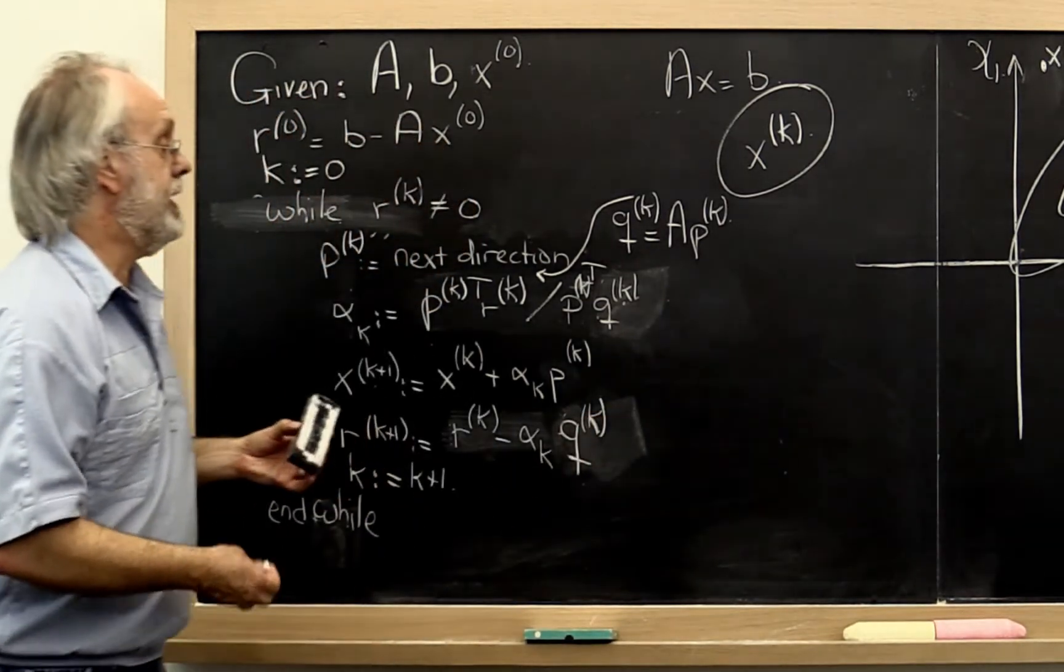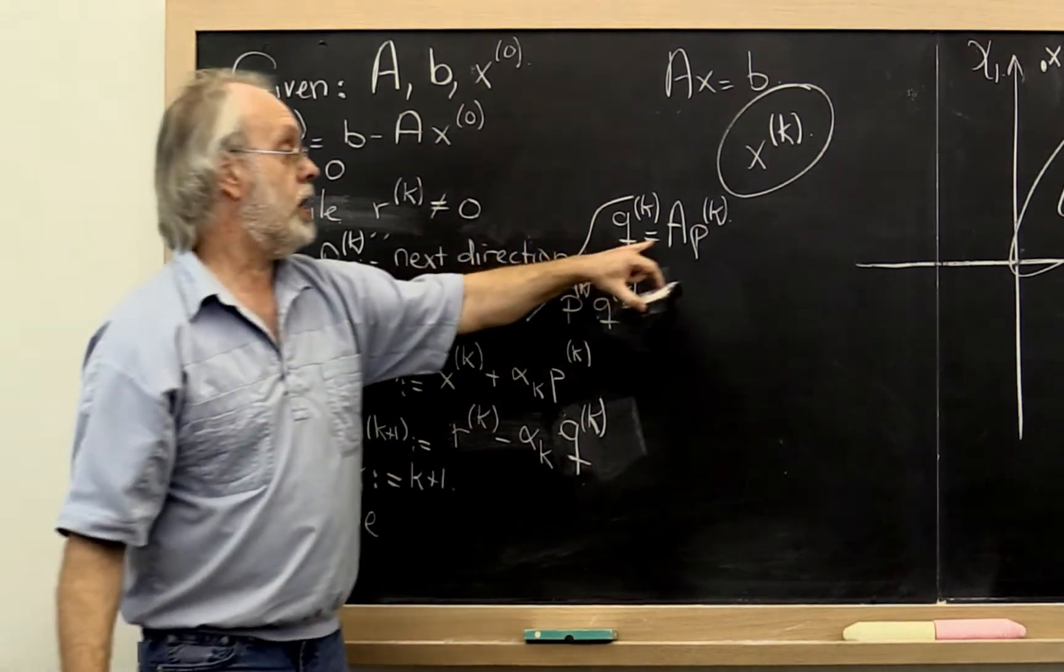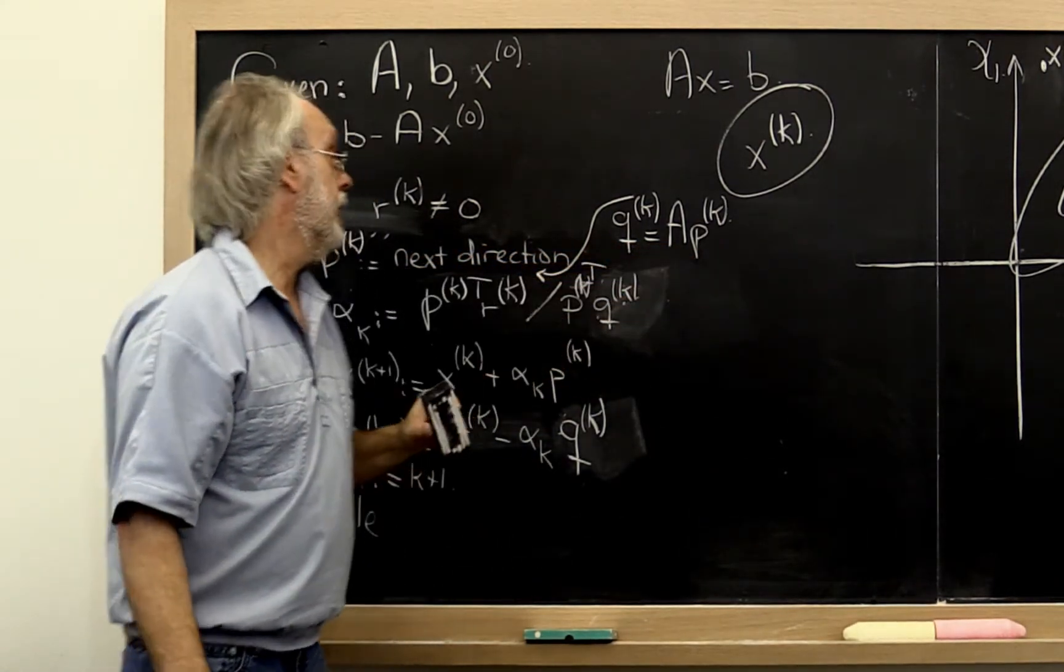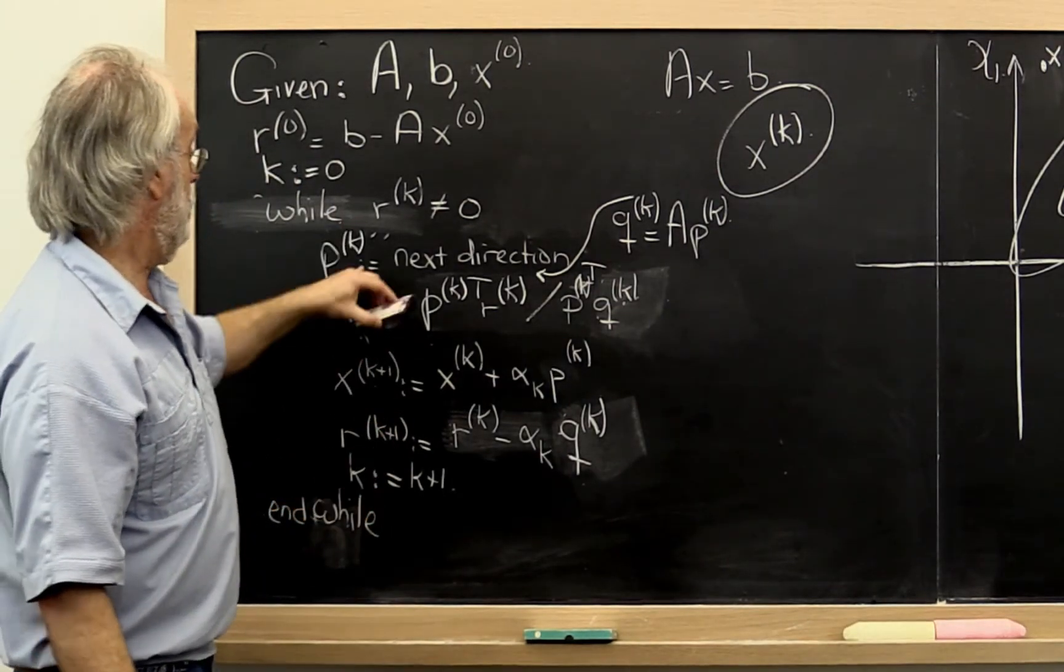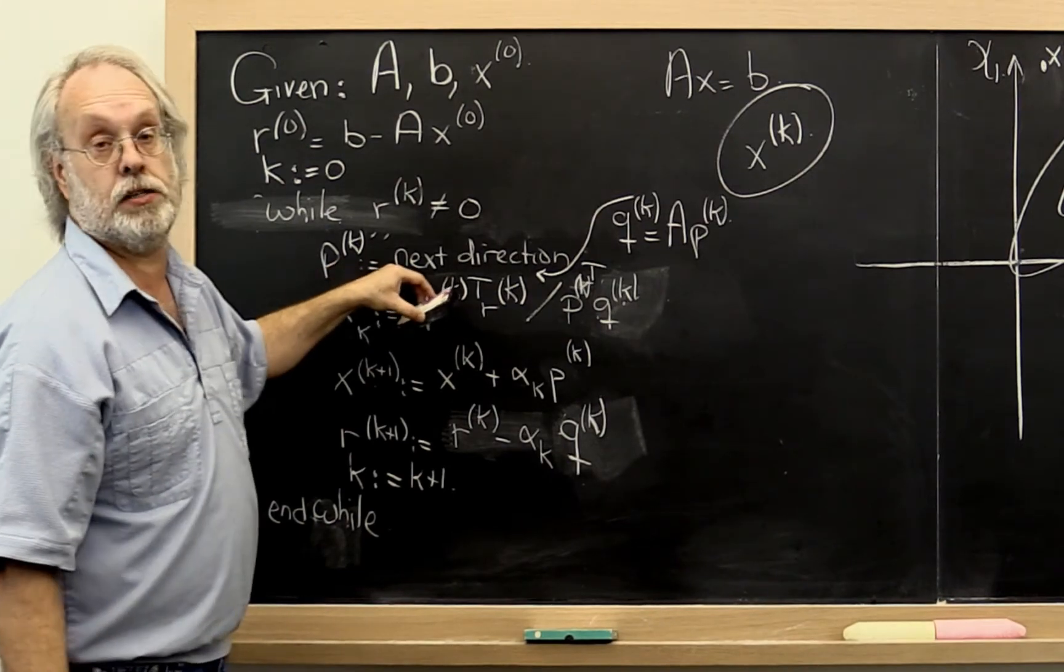And what we notice is that now we have an algorithm that only requires one matrix vector multiply per iteration. And the only thing that's left to do is to figure out how to cleverly pick our next direction.